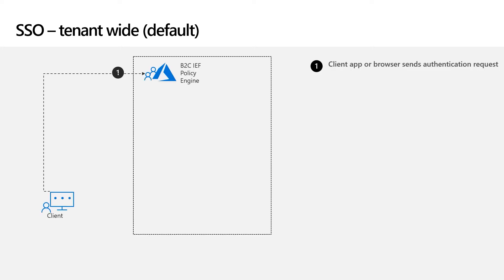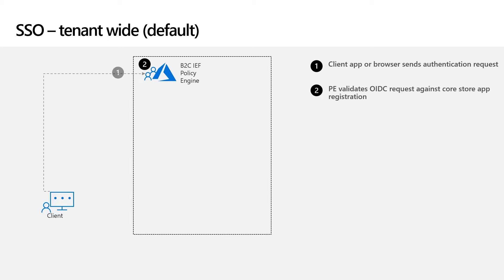Let's say you've already signed into the Contoso Groceries app and now try to log into the Contoso Pharmacy app. The flow begins when a user clicks to sign in from the Contoso Pharmacy app. The app makes an OpenID Connect authentication request which includes your B2C policy ID in the URL. The request reaches an endpoint at yourtenantname.b2clogin.com. The policy engine validates the OpenID Connect request by comparing its parameters to the application registration stored in the core store.